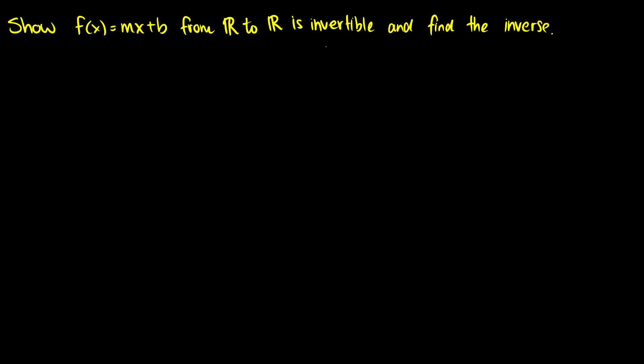In this video we're going to tackle some more questions with inverses. For the first one, we want to show that f(x) = mx + b from ℝ to ℝ is invertible and find the inverse. To show it's invertible, we need to show it is a bijective function — meaning we need to show that it's both injective and surjective.